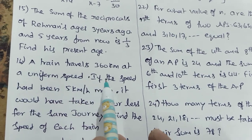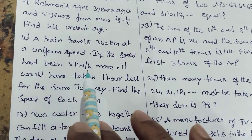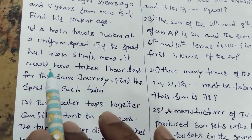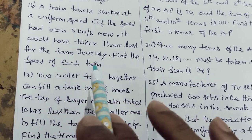A train travels 360 km at uniform speed. If the speed had been 5 km per hour more, it would have taken 1 hour less for the same journey. Find the speed of the train.